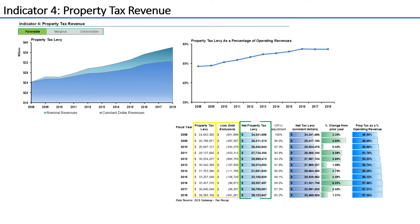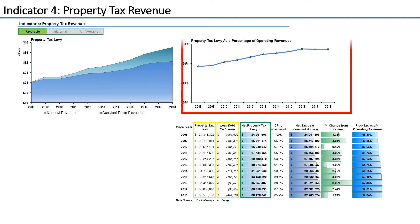Any debt or capital exclusions must be subtracted from the tax levy when monitoring this indicator, as these funds are restricted to a particular capital project and will expire at the end of the borrowing term. Like the two prior indicators, this indicator tracks the total amount of revenue adjusted for inflation as well as the revenue source as a percentage of total revenues.